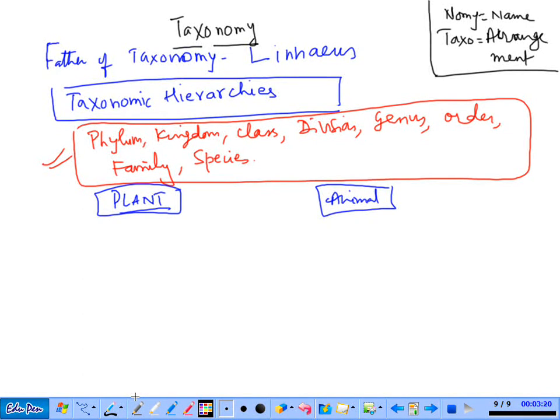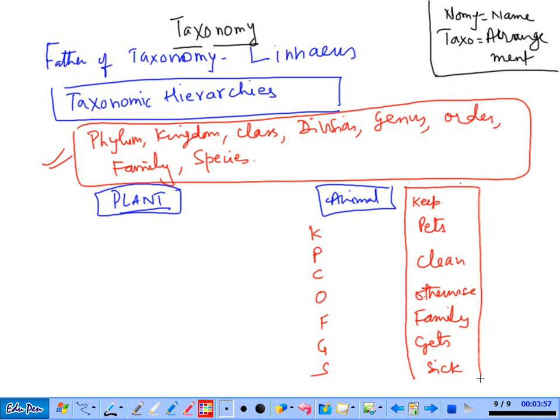We have animal, a pet. Keep pets clean, otherwise family gets sick. Kingdom, Phylum, Class, Order, Family, Genus, Species. Your answer will be right.